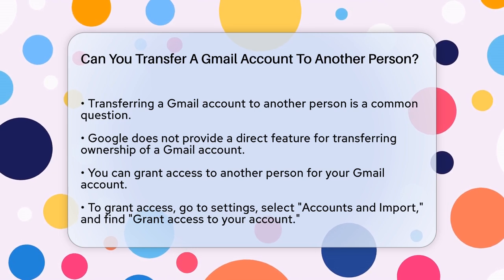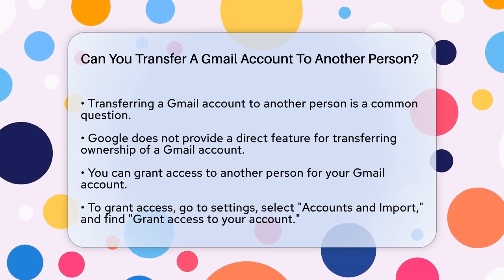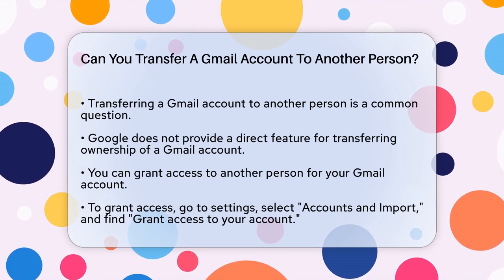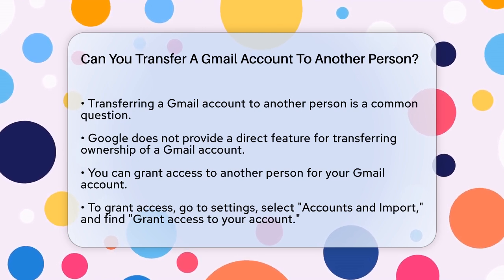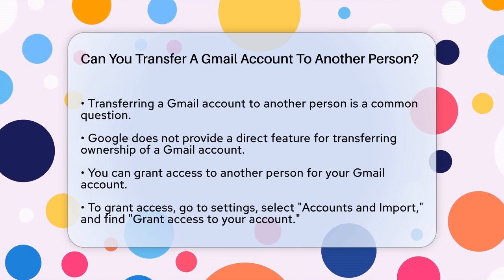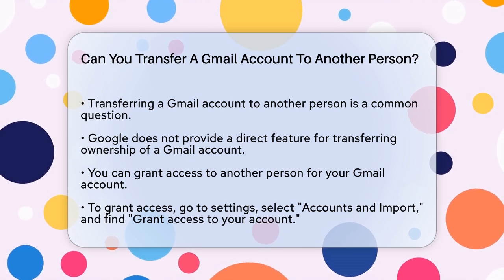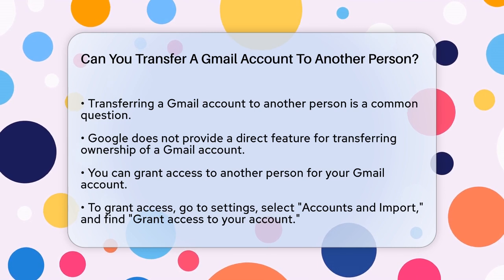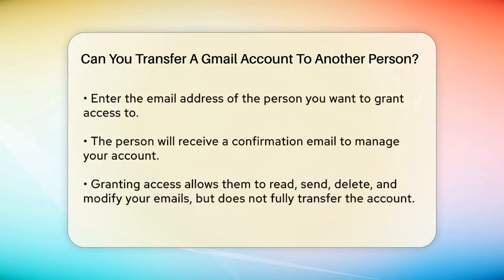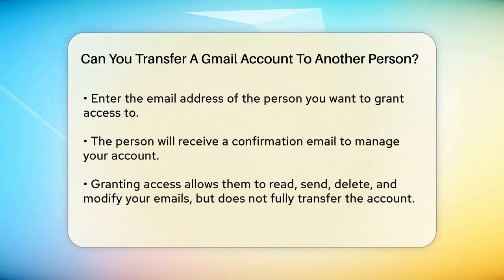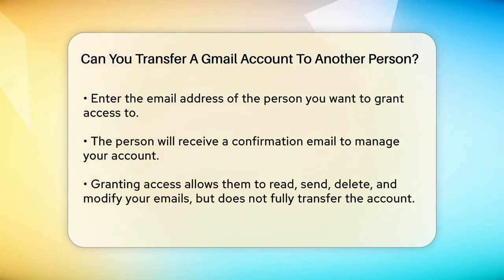Granting access. One way to give someone else control over your Gmail account is by granting them access. Open your Gmail account and click on the gear icon to go to Settings. Select the Accounts and Import tab. Go to the Grant access to your account section and click on Add another account. Enter the email address of the person you want to grant access to. They will receive a confirmation email, and once they confirm, they can manage your account — reading, sending, deleting, and modifying your emails, as well as managing your contacts. However, this doesn't fully transfer the account; it just gives them access.